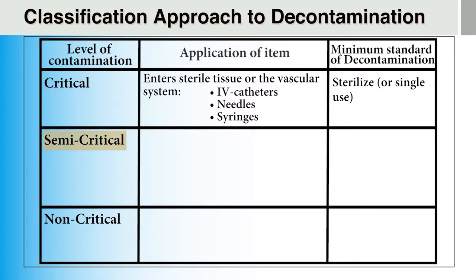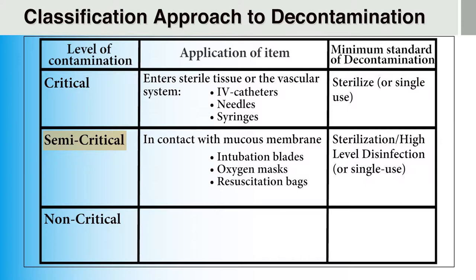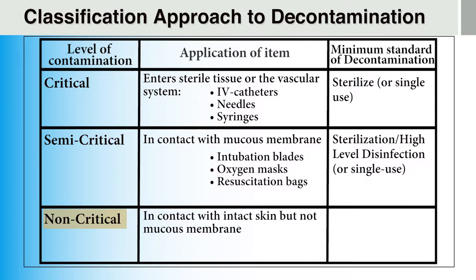A semi-critical level of contamination includes items that come into contact with mucous membranes such as oxygen masks, resuscitation bags, and intubation blades. Objects that are semi-critically contaminated could be decontaminated with an EPA-approved, high-level disinfectant or sterilized unless they are single use. A non-critical level of contamination includes objects that come into contact with intact skin but not mucous membranes, such as stethoscopes, stretchers, and radios. Objects that are non-critically contaminated must be disinfected with an EPA-approved disinfectant.